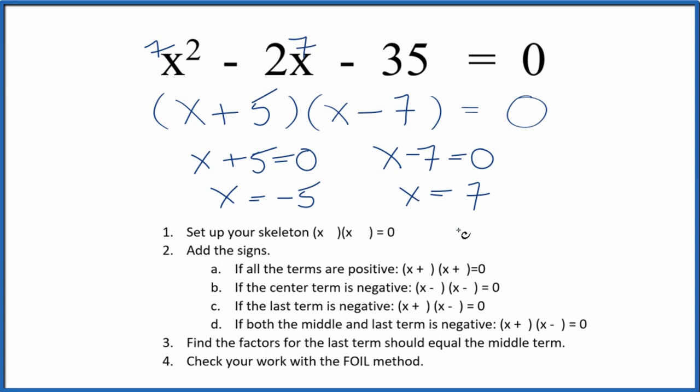If you used the quadratic equation to do this, you'd get the same answers. This is Dr. B factoring the equation x squared minus 2x minus 35.